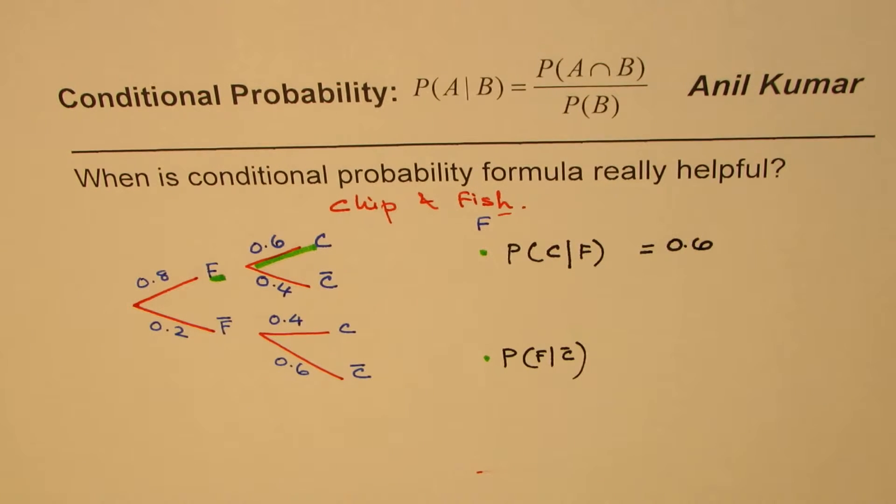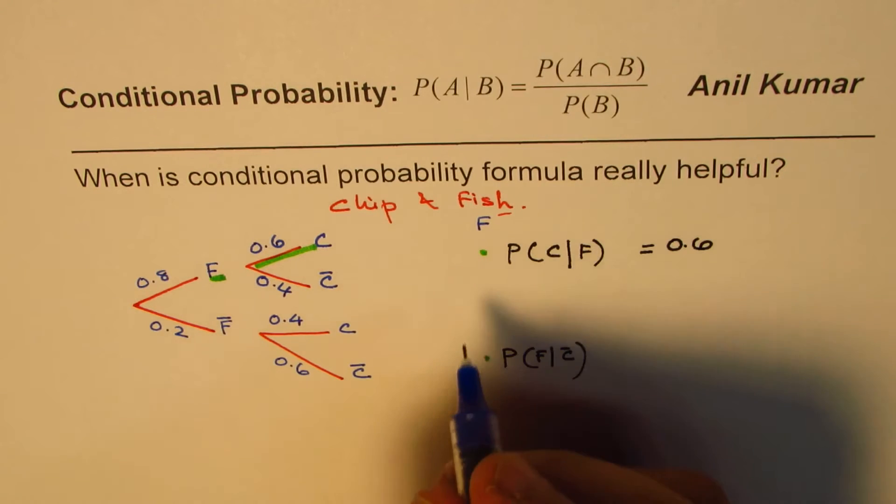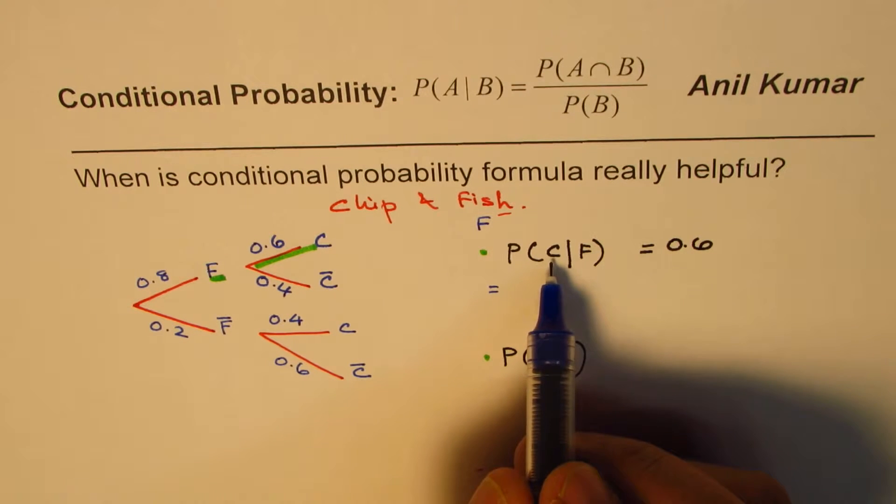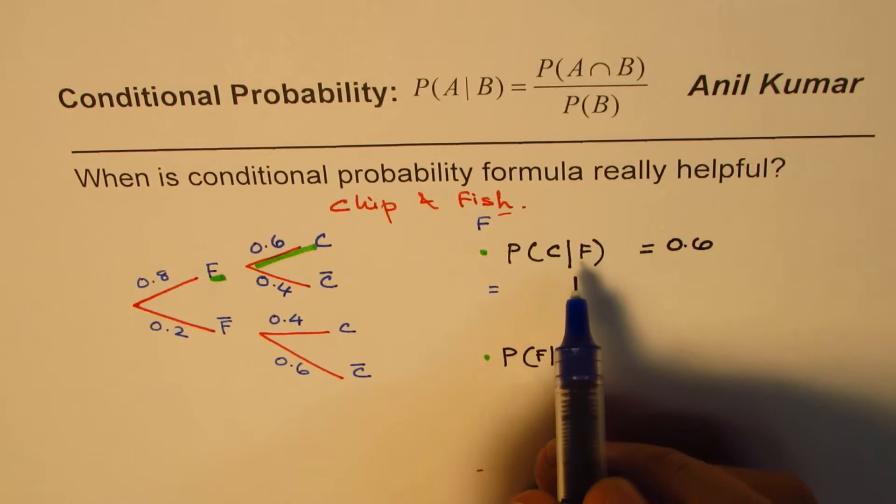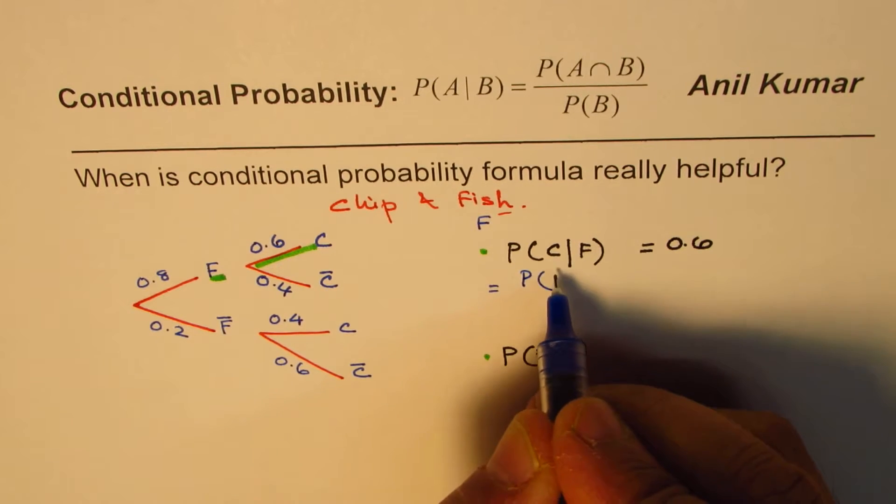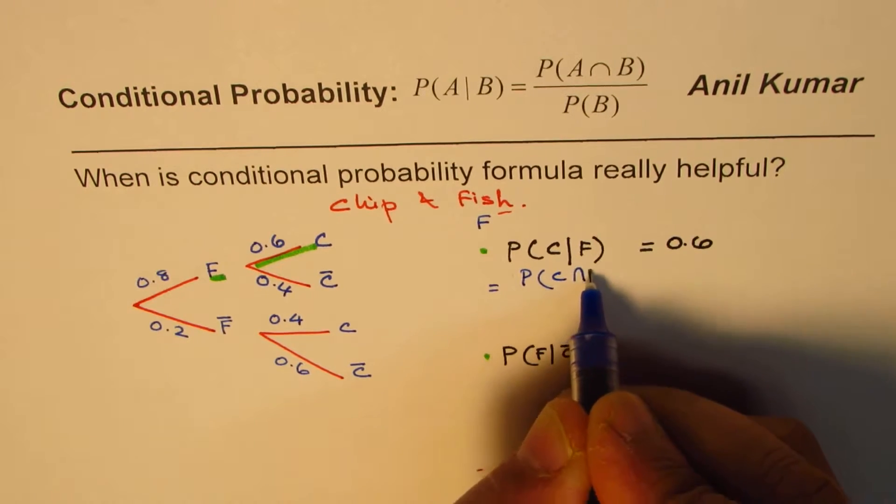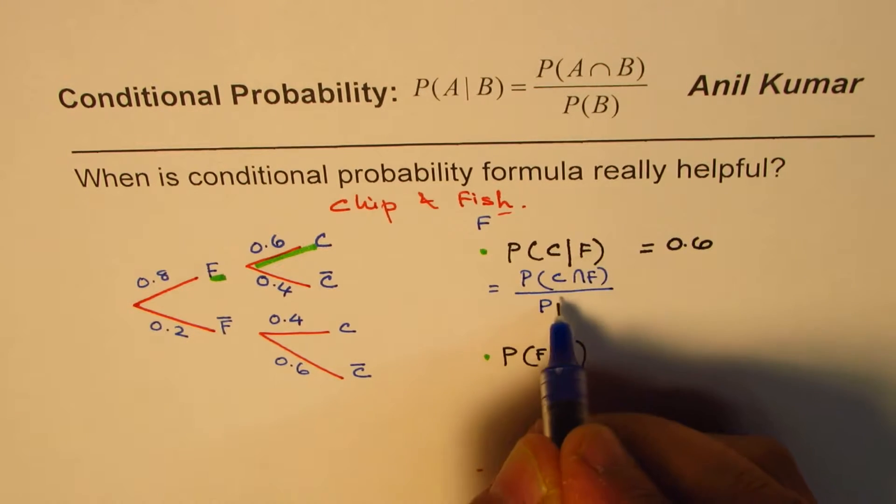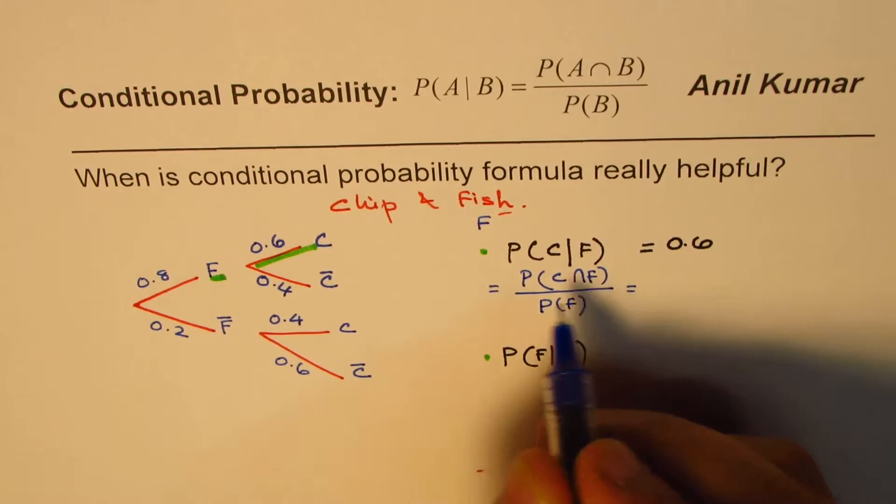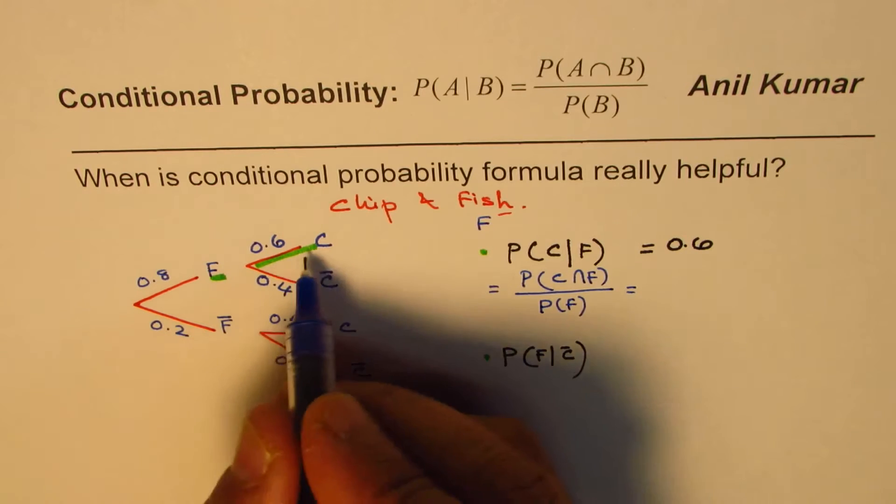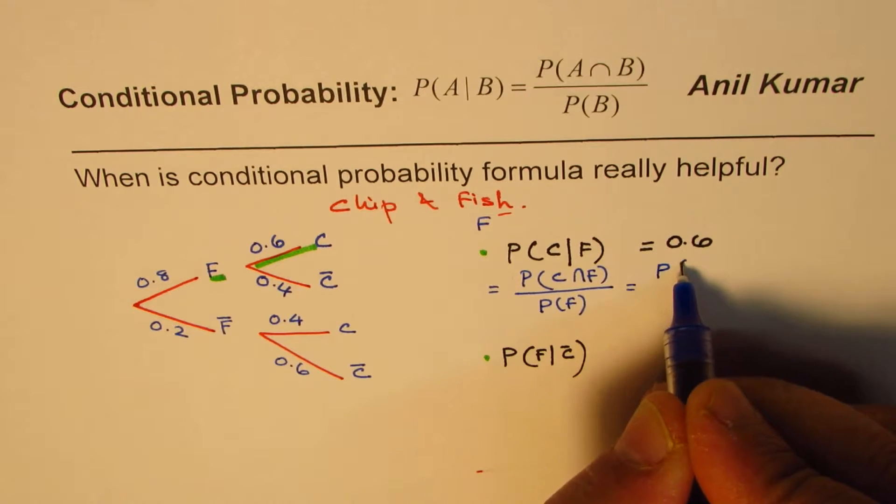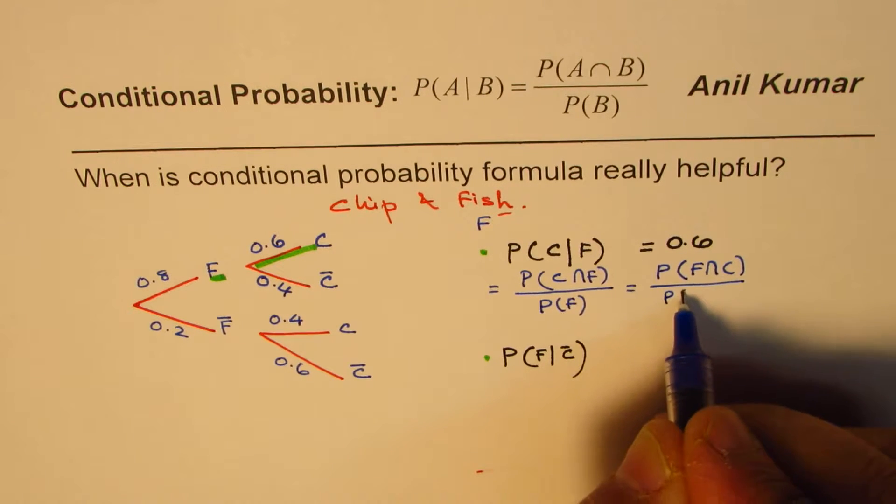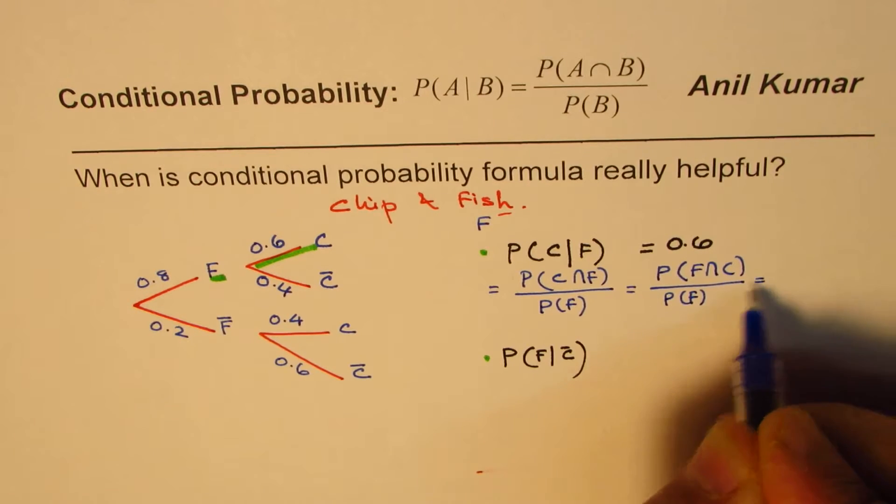Well, we get the same result by applying the formula also. Let us see how. We are saying that probability of chips when fish is given is probability of intersection of these two, that is chip and fish, divided by probability of fish. Now, intersection of chip and fish and fish and chip is kind of same, so I could write this formula as probability of fish and chip intersection, divided by probability of fish. Now, what is this intersection?